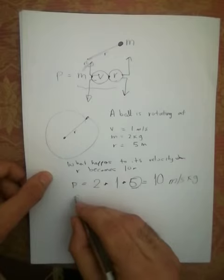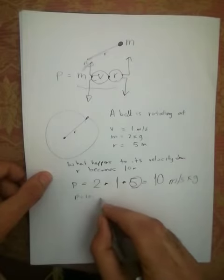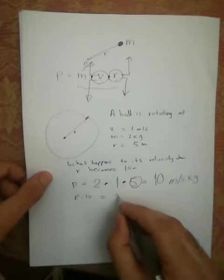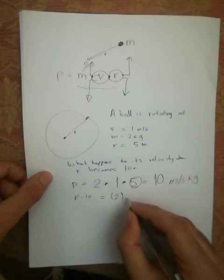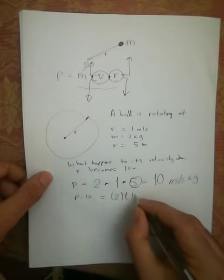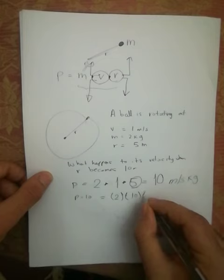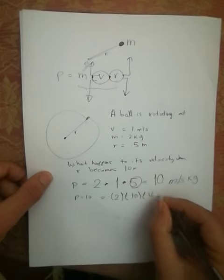And so we're going to have p equals 10, and we're going to conserve that. So 10 equals the mass, which is not going to change, the radius, which we say is going to change, and the velocity, which is unknown.